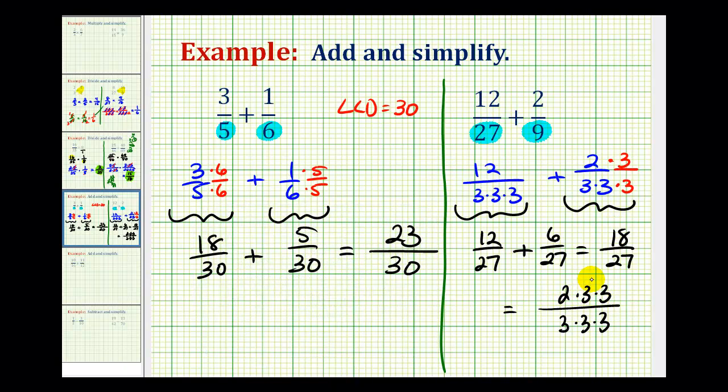So this simplifies, 3 over 3 simplifies to 1 here and here. So the final sum here is 2 thirds.